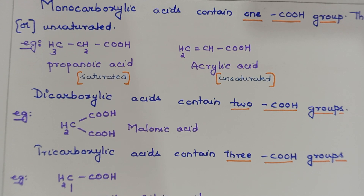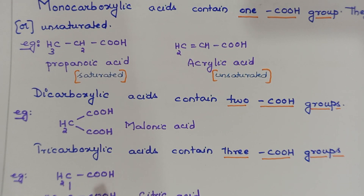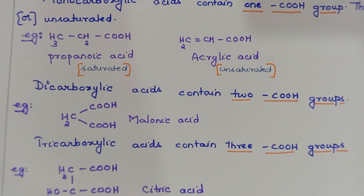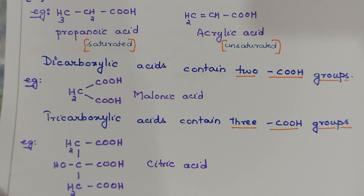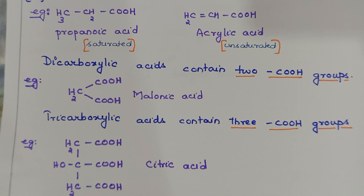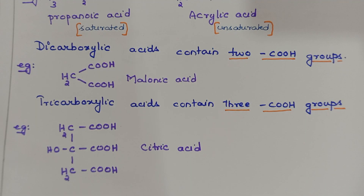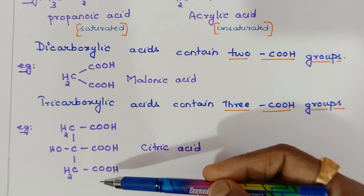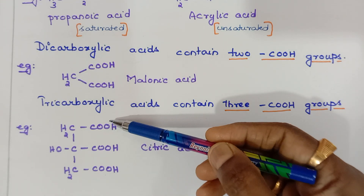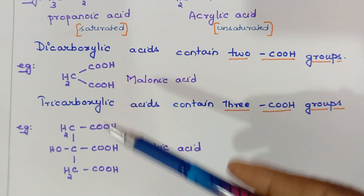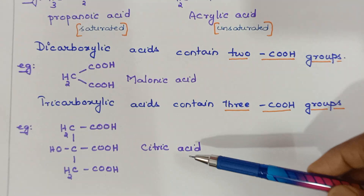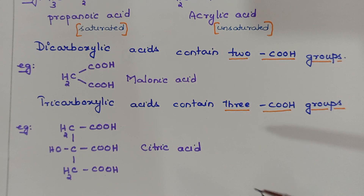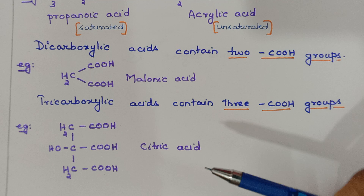Tricarboxylic acids contain three COOH groups. The example given is a compound with three COOH groups — one, two, three — and it is called citric acid. So this covers monocarboxylic, dicarboxylic, and tricarboxylic acids.